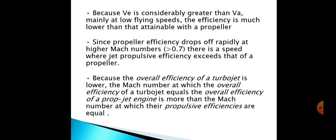Because Ve is considerably greater than Va, mainly at low flying speeds, the efficient fuel consumption is much lower than that attainable with a propeller. Since propeller efficiency drops off rapidly at higher Mach numbers (greater than 0.7), there is a speed where jet propulsive efficiency exceeds that of a propeller. Because overall efficiency of turbojet is lower, the Mach number at which the overall efficiency of turbojet equals the overall efficiency of propeller jet engine is more than the Mach number at which their propulsive efficiencies are equal.